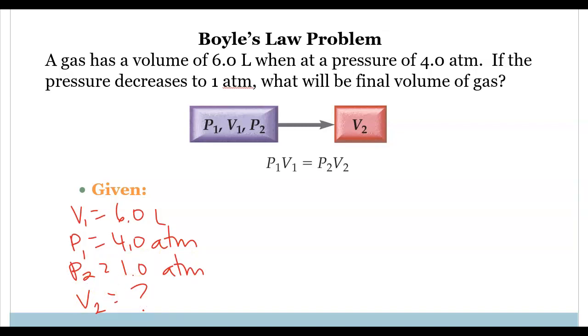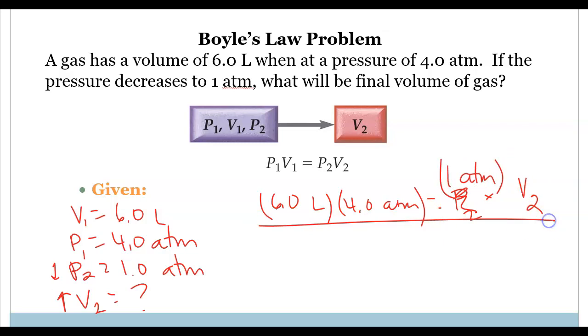If we're making a prediction, we should predict that the volume is going to increase because the pressure is decreasing. If we plug in these numbers, we would have 6.0 liters for V1, 4.0 atmospheres, and then 1 atmosphere times V2. We'll divide everything by 1 atmosphere. So 24 liters will be equal to volume two. This makes sense. The volume has increased from the initial volume, which makes sense based on Boyle's Law.